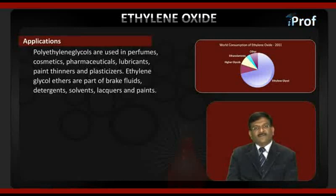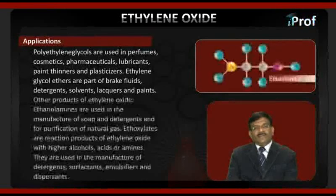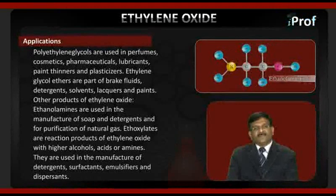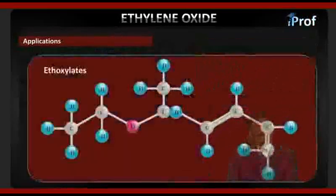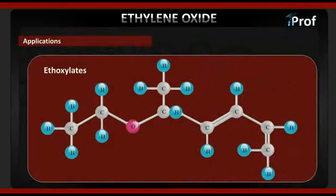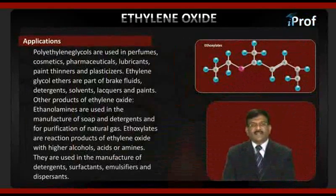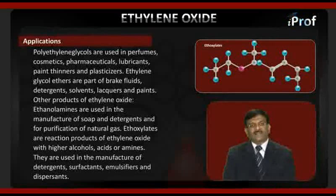Another product of ethylene oxide, ethanolamines, are used in the manufacturing of soap and detergents and for the purification of natural gas. Ethoxylates are reaction products of ethylene oxide with higher alcohols, acids, or amines, and they are used in the manufacture of detergents, surfactants, emulsifiers, and dispersants.